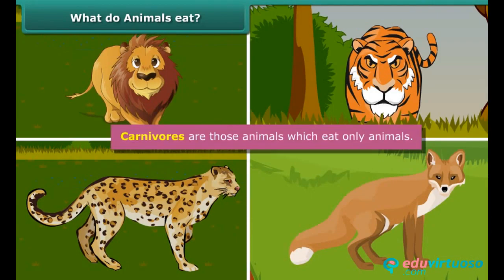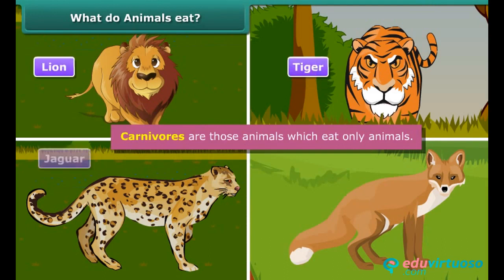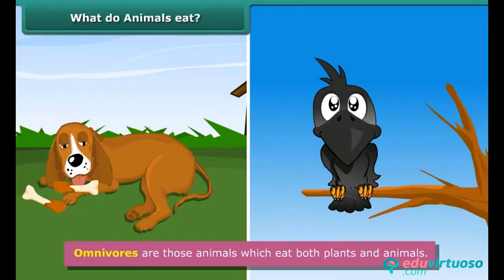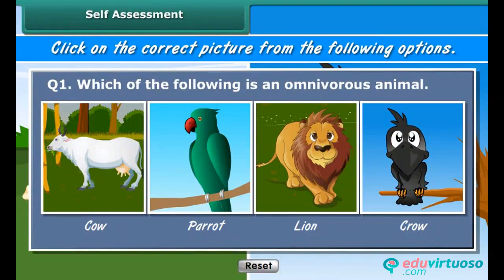Carnivores are those animals which eat only animals — for example, lion, tiger, jaguar, jackal, etc. While omnivores are those animals which eat both plants and animals — for example, dog, crow.